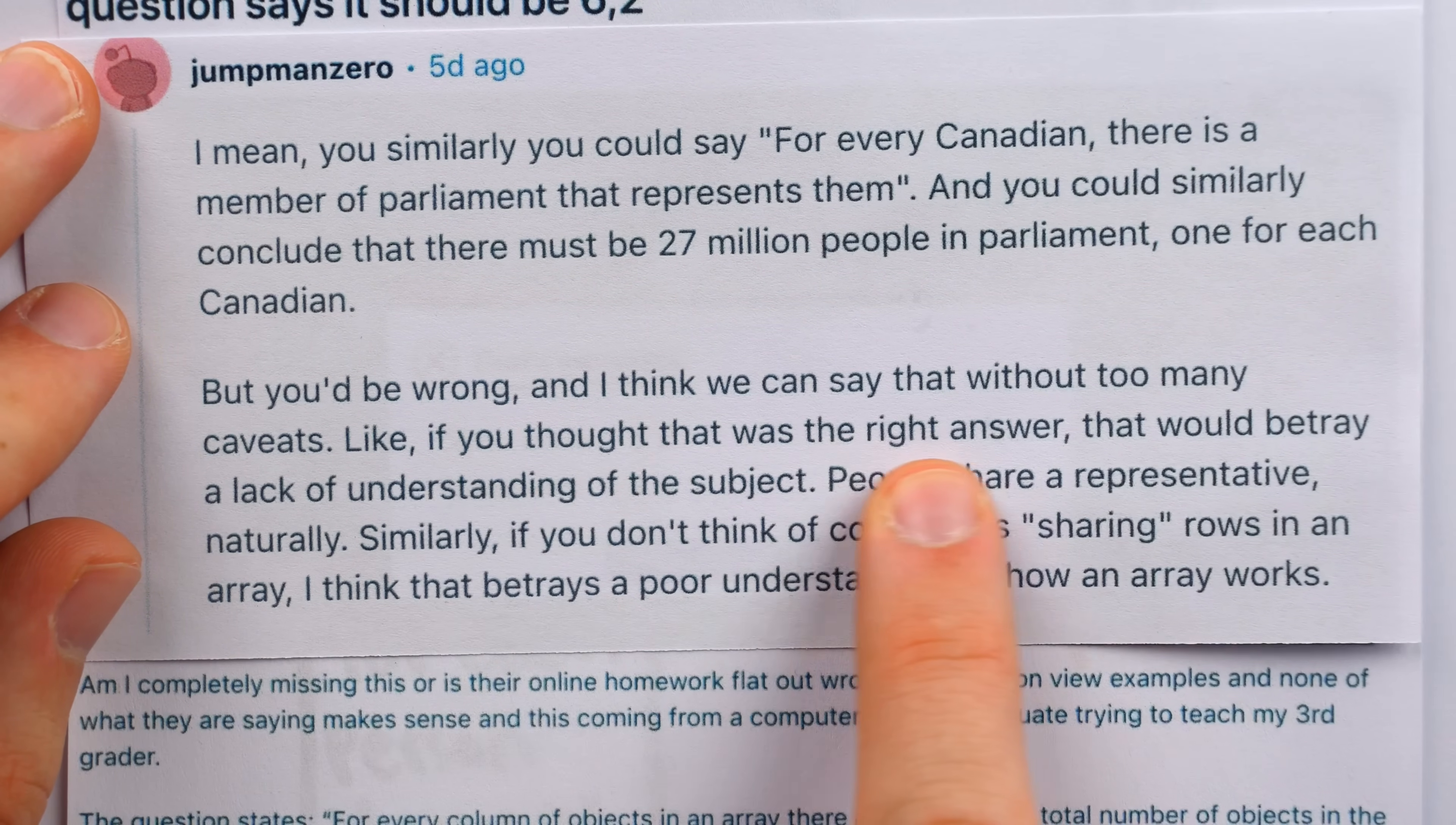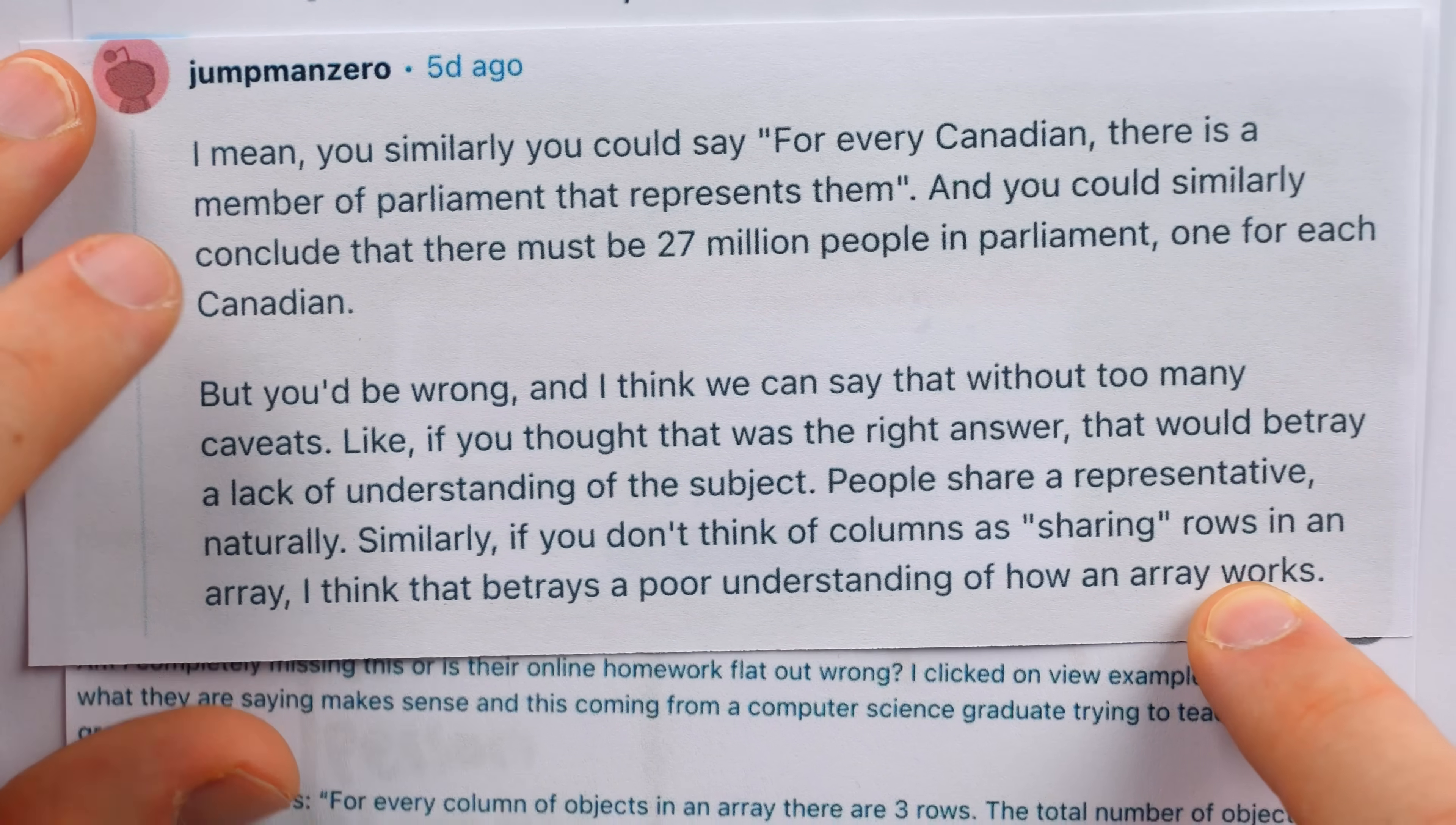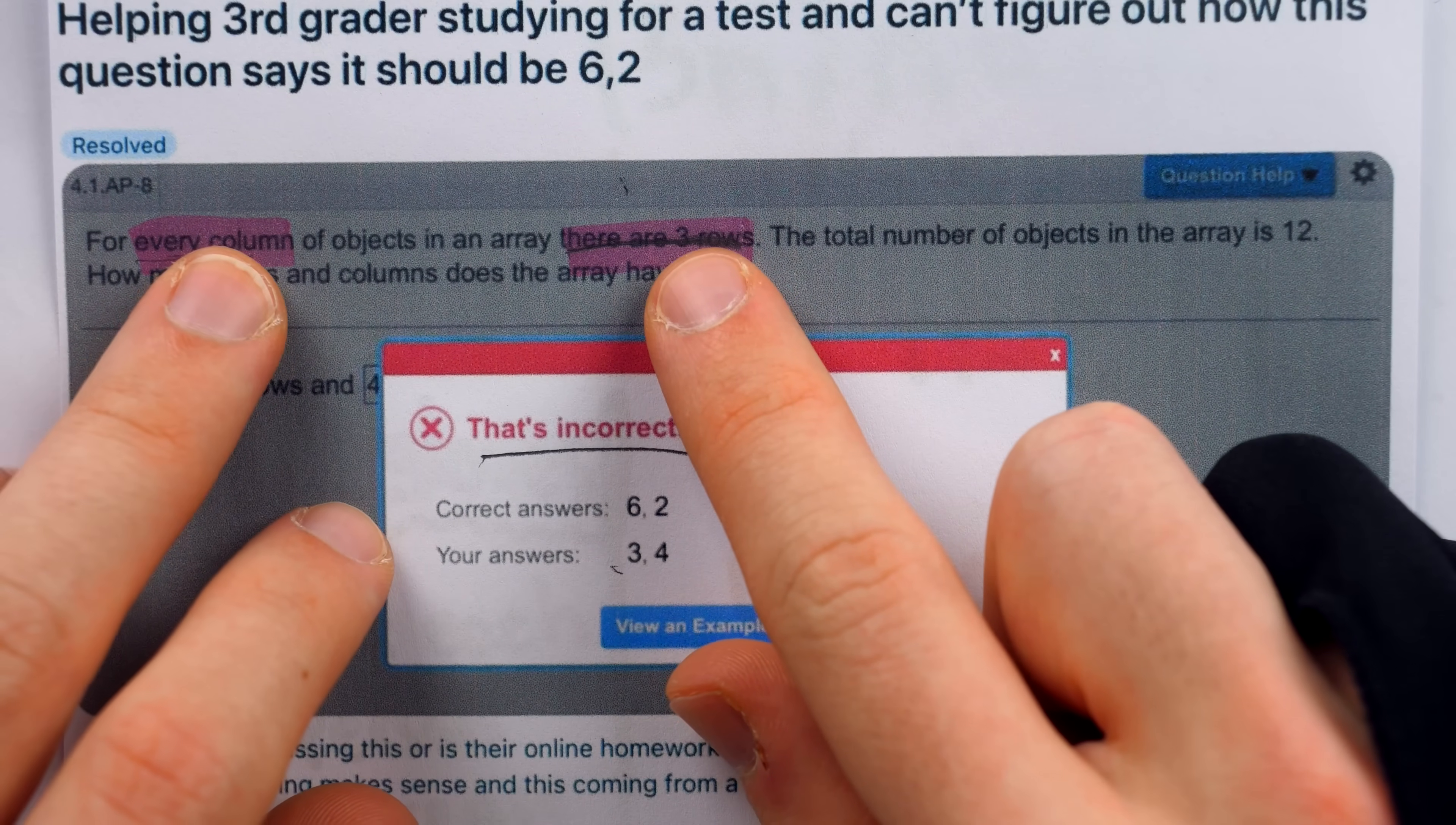He says, if you thought that was the right answer, that there must be 27 million people in Parliament, that would betray a lack of understanding of the subject. And similarly, if you don't think of columns as sharing rows in an array, he thinks that betrays a poor understanding of how an array works. So the argument here is that the wording is specifically bad for this type of question concerning arrays. Again, if it was something like, for every person, there are two gloves, we'd understand exactly what is meant. But in the array situation, with this being rows and columns, things are definitely a little easier to confuse.